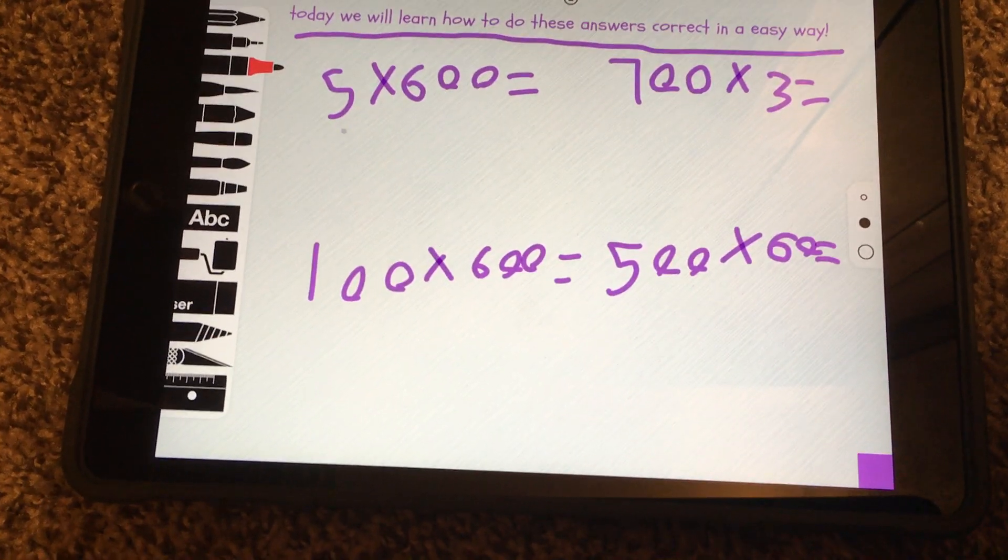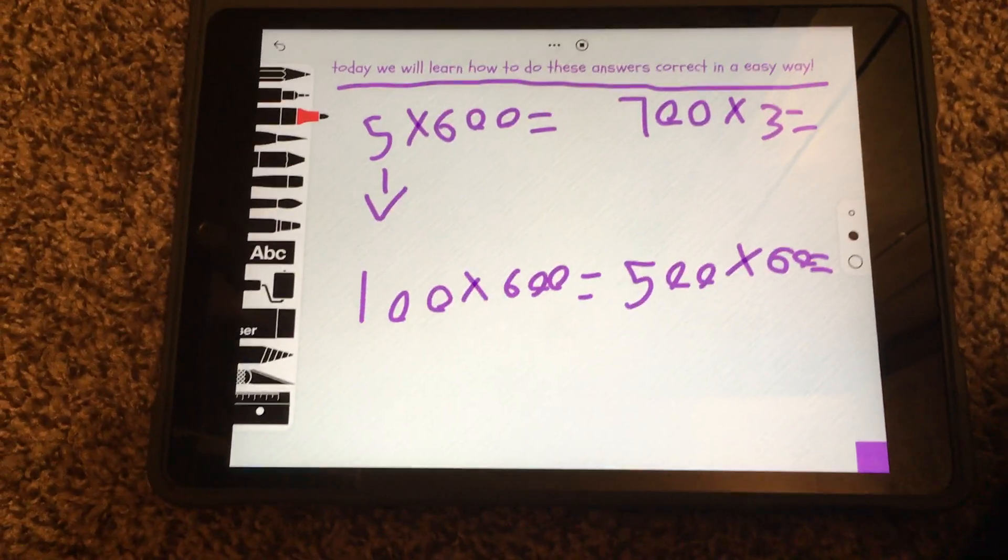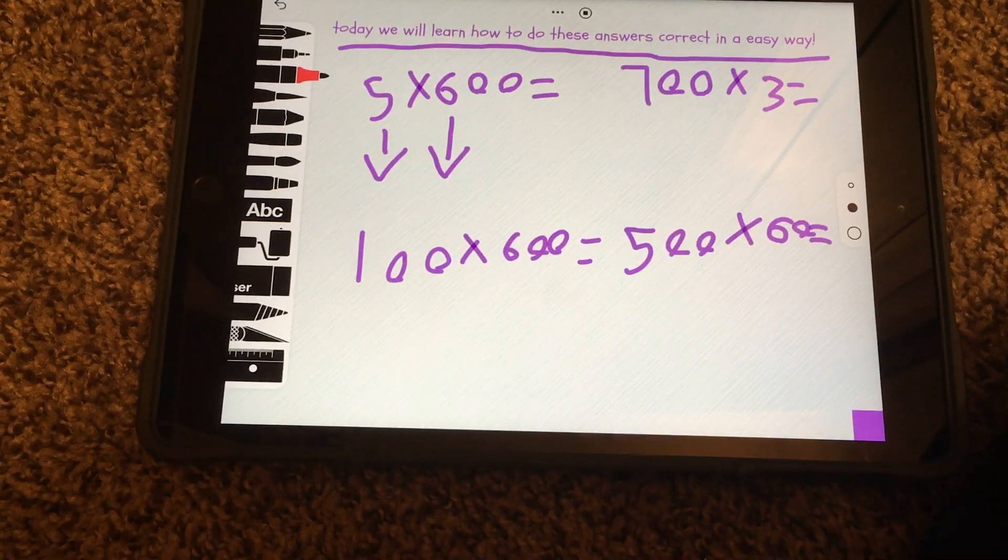First is 5 times 600. You take the 5 down and the 6 down, no zeros.